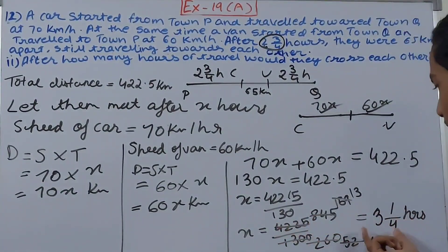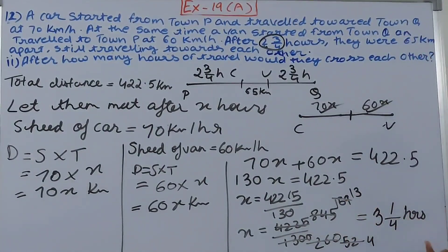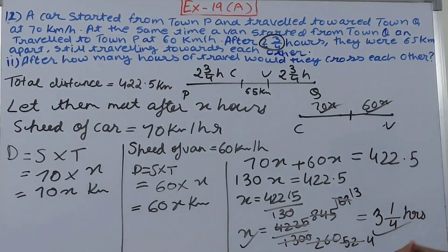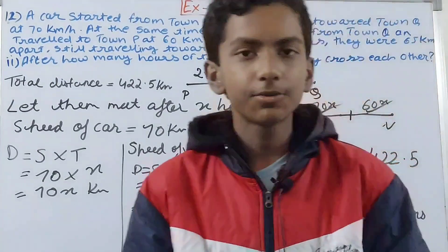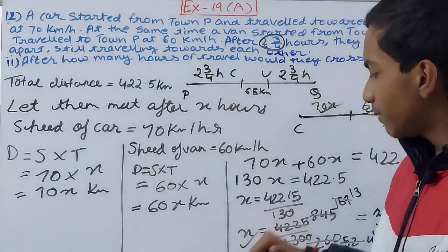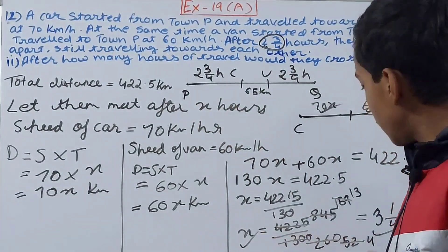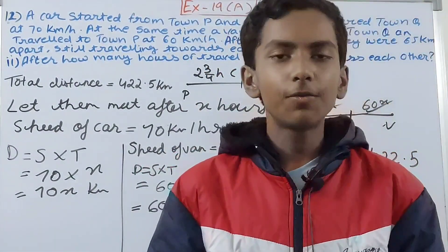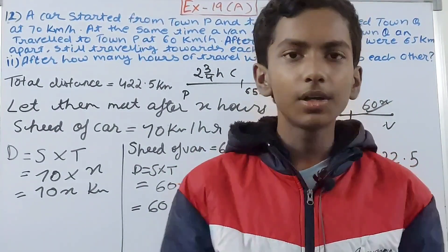Simplifying 13/4 gives us 3¼ hours. So x = 3¼ hours. This is the time after which the car and van will cross each other. The total time after 2¾ hours of prior travel at which they meet is 3¼ hours. If you are new to my YouTube channel, don't forget to subscribe and leave a like.